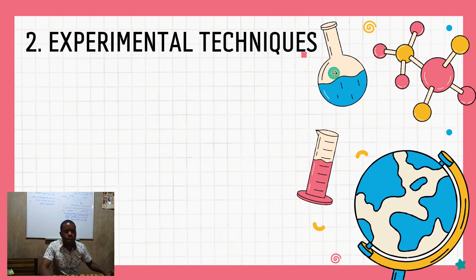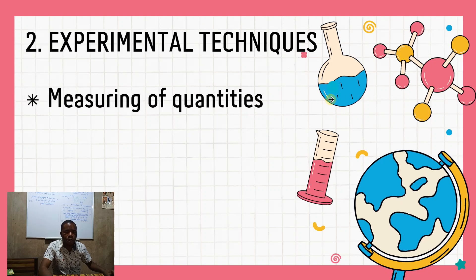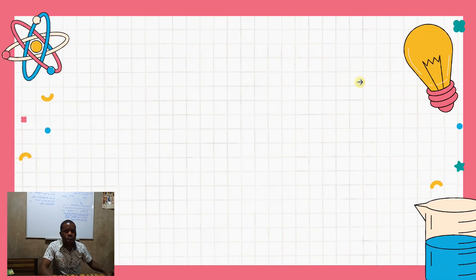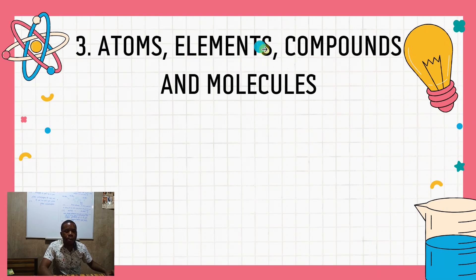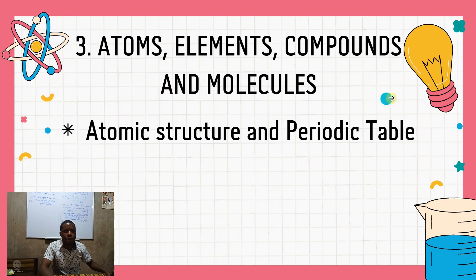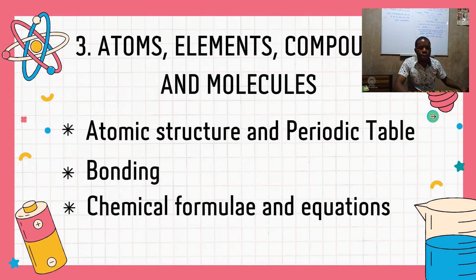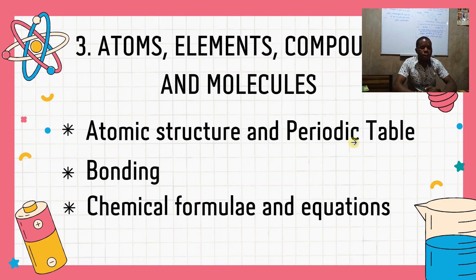The second Grade 10 topic is experimental techniques. Under experimental techniques, subtopics include measuring of quantities and separating mixtures. Then we move to another Grade 10 topic: atoms, elements, compounds, and molecules. Under this topic you need to look at atomic structure and the periodic table, bonding, chemical formula, and equations. These topics do not miss in any Science Paper 2 examination — they form the cornerstone of chemistry.